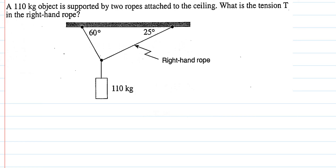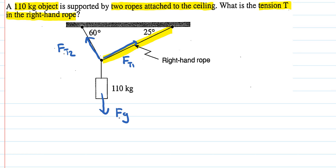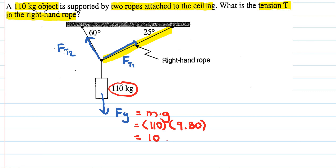Here's another similar example. We have a 110-kilogram object supported by two ropes attached to the ceiling, and we want to find the tension T in the right-hand rope. Drawing the free body diagram gives FT1, FT2, and FG downward. We calculate the force of gravity: FG equals mass times g, so 110 times 9.80 equals 1078 newtons.